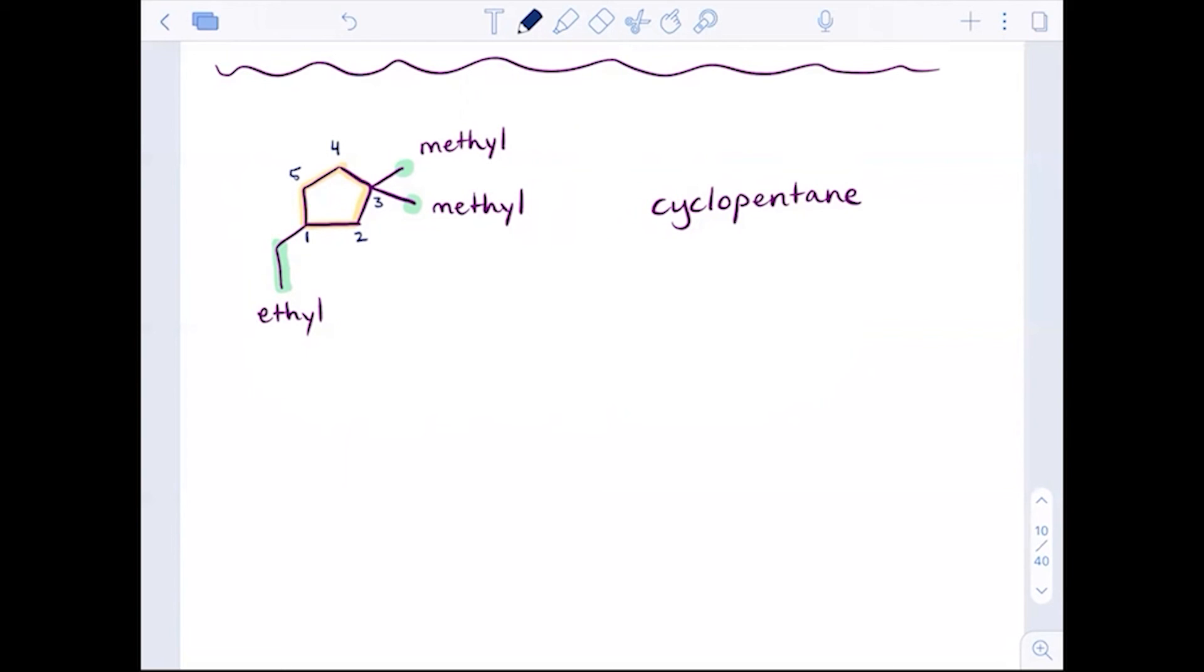But here with this numbering system, starting with the ethyl, I'd have a one for the ethyl and a three, three for my methyls. One, three, and three is not as good as a one, two, three, four, five. This numbering system would say one methyl, one methyl, three ethyl. See how we're giving more ones? A one, one, three is better than the one, three, three.